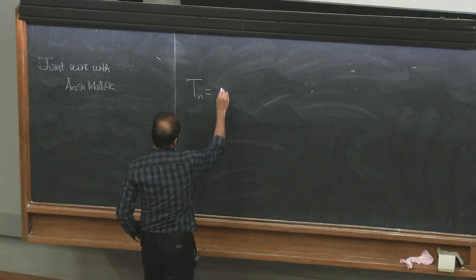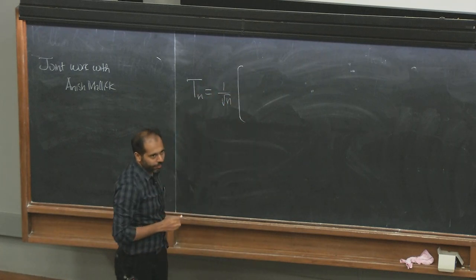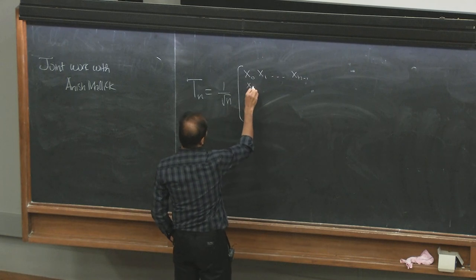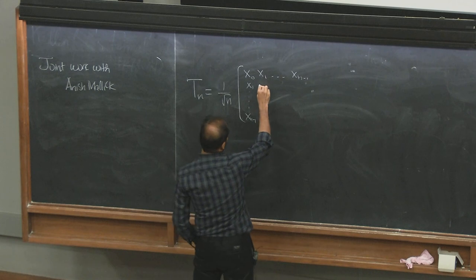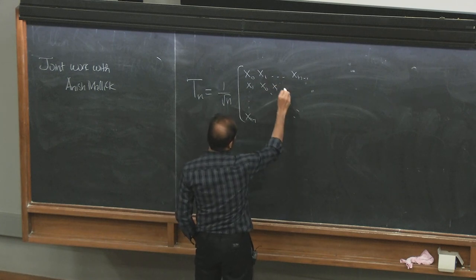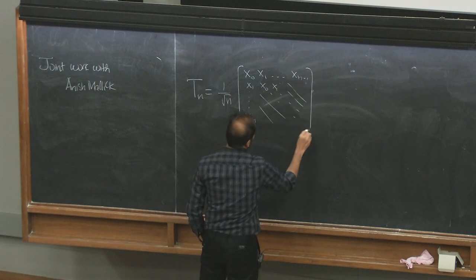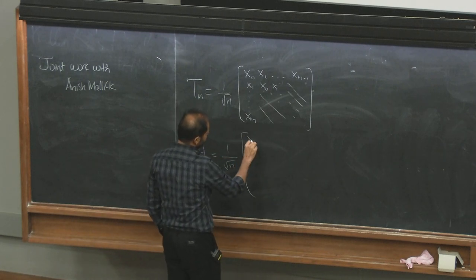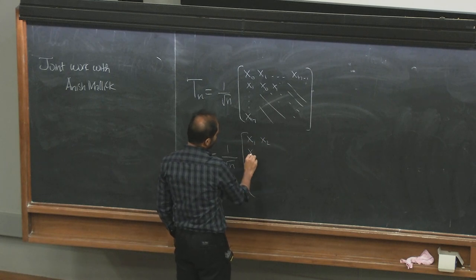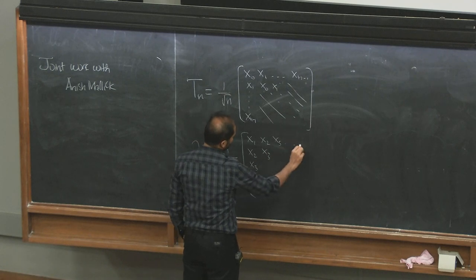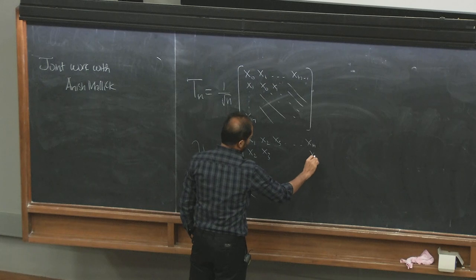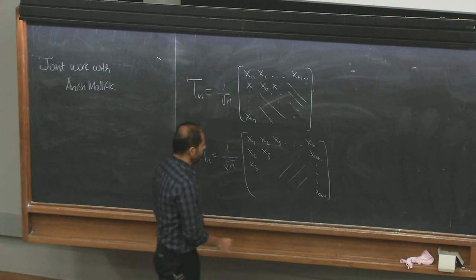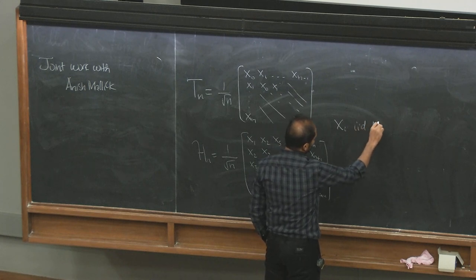Let me define them. The random Toeplitz matrix is also symmetric. It has x1, x2, ..., x_{n-1}, and it is symmetric with the same x0 on the diagonal, x1 here, etc. — constant on the diagonals. The random Hankel matrix is constant on the anti-diagonals: x1 here, x2, x3, and so on up to x_n, x_{n-1}, up to x_{2n-1}. The x_i's are i.i.d. normal(0,1) random variables.